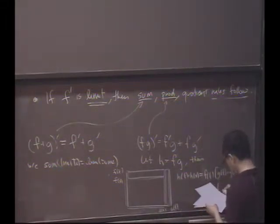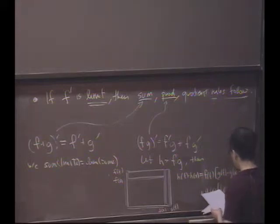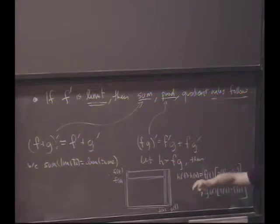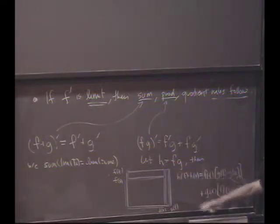Times what? f of t minus f of x. And you see what you might then do? I'll take both sides and divide by t minus x, which is the quotient I'm interested in.